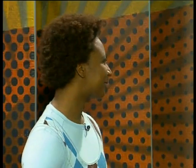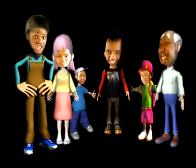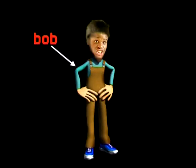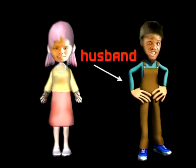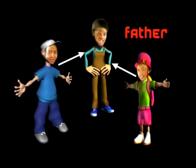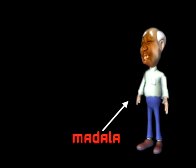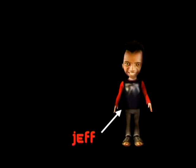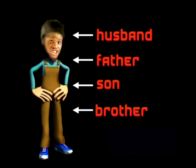There's something else about definitions that makes it all the more important to know and understand them — there can be several different definitions for the same thing. Take a look at this example: this is the Mohalle family gathering, and this is Bob. To Precious he's a husband, but to Joy and George he's a father. Yet to Madala Mohalle he's a son, and to Jeff he's a brother. There you saw several definitions for Bob — and all are correct. We will see later that polygons can also be defined in different ways.